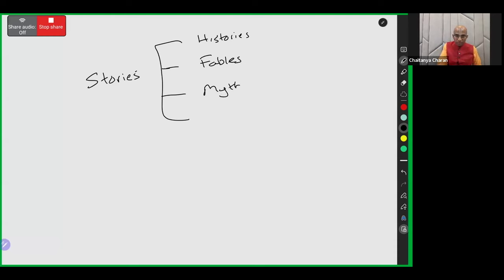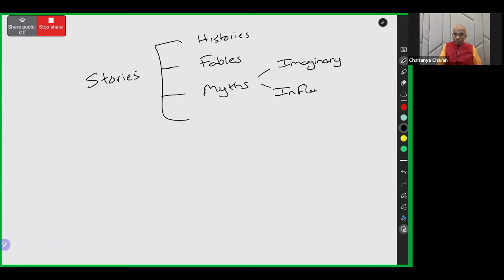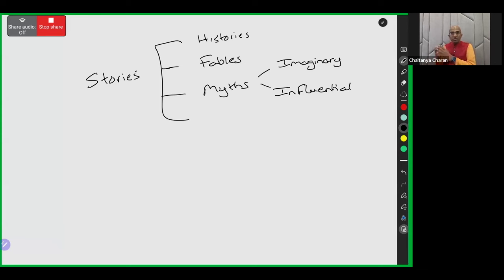Stories can also be myths. The word 'myth' is a little polarizing because it sometimes conveys the idea of imaginary, and generally we rebel against the idea of scriptures being called imaginary. But it also has a less evaluative idea — it conveys influence rather than imagination. A mythical character is one who has become larger than life in the Indian imagination. So myth means a very influential story — it's more a statement about its influence than an evaluation of its reality.